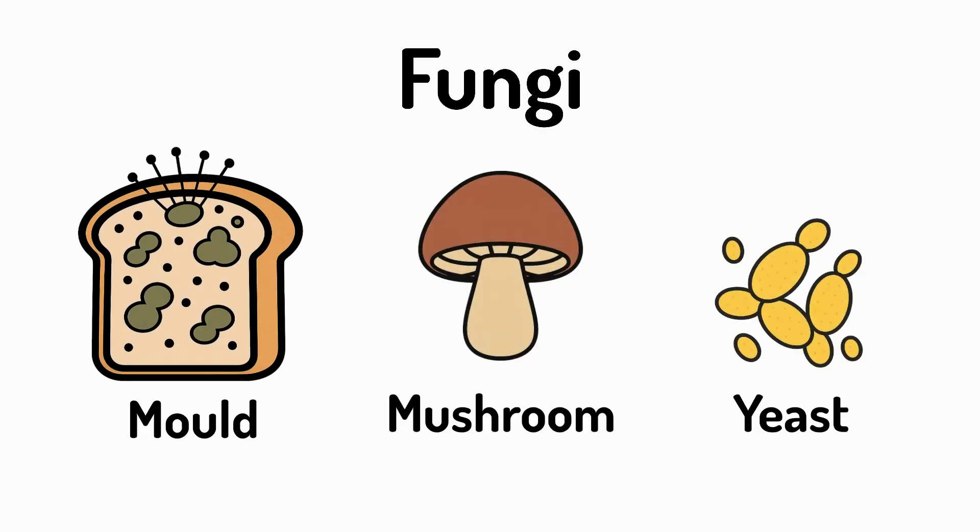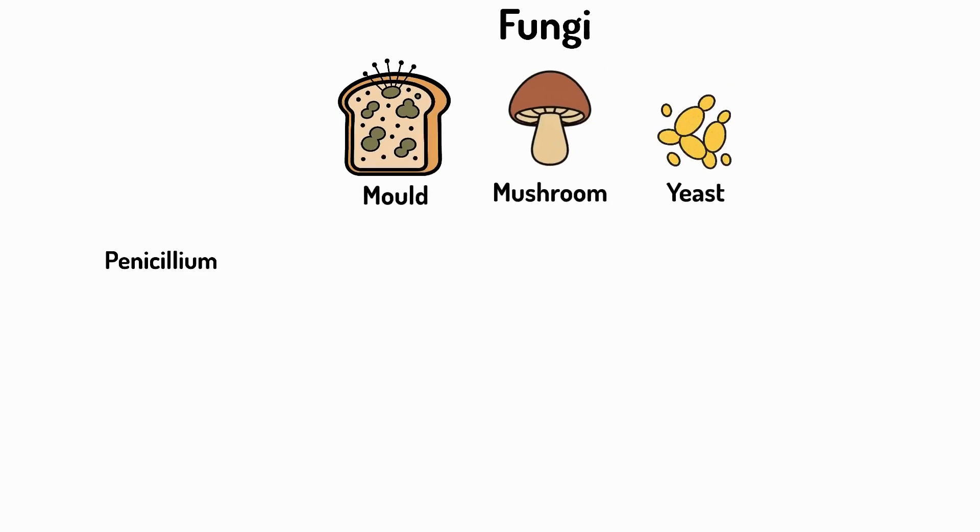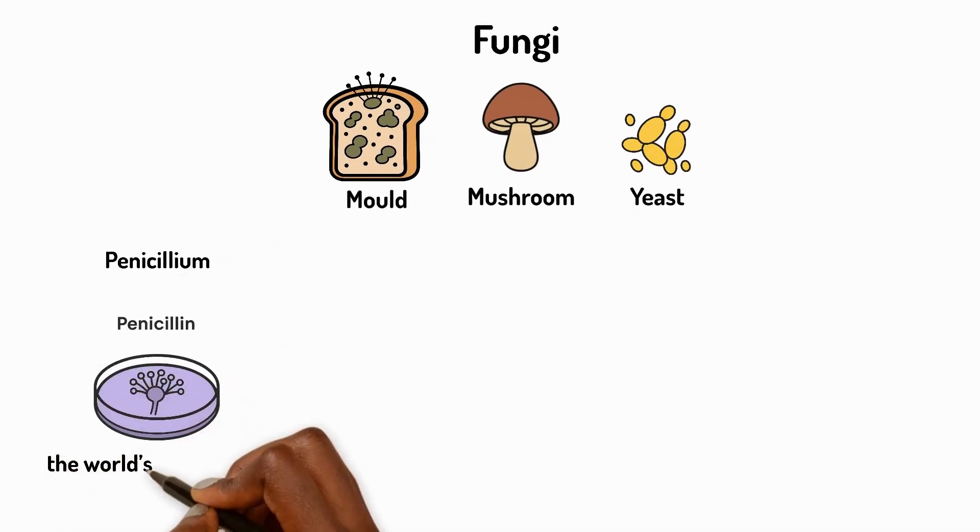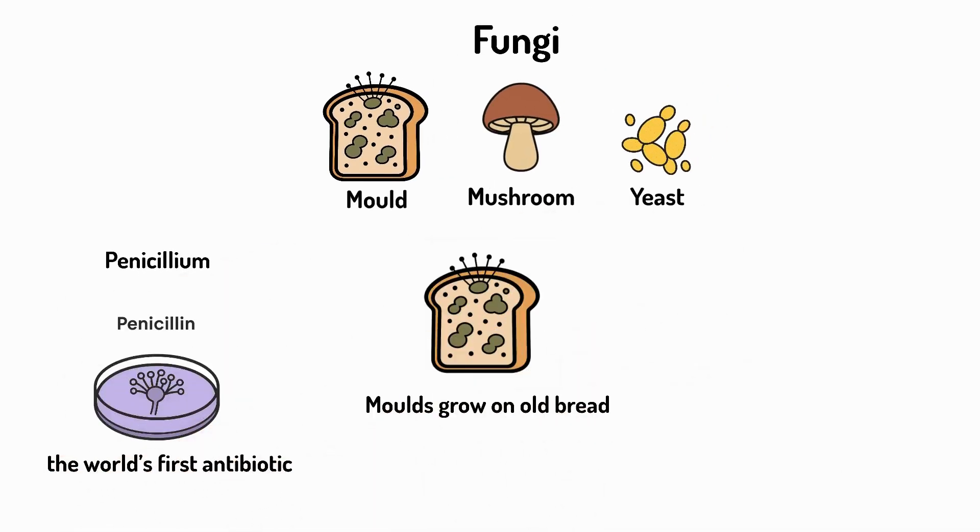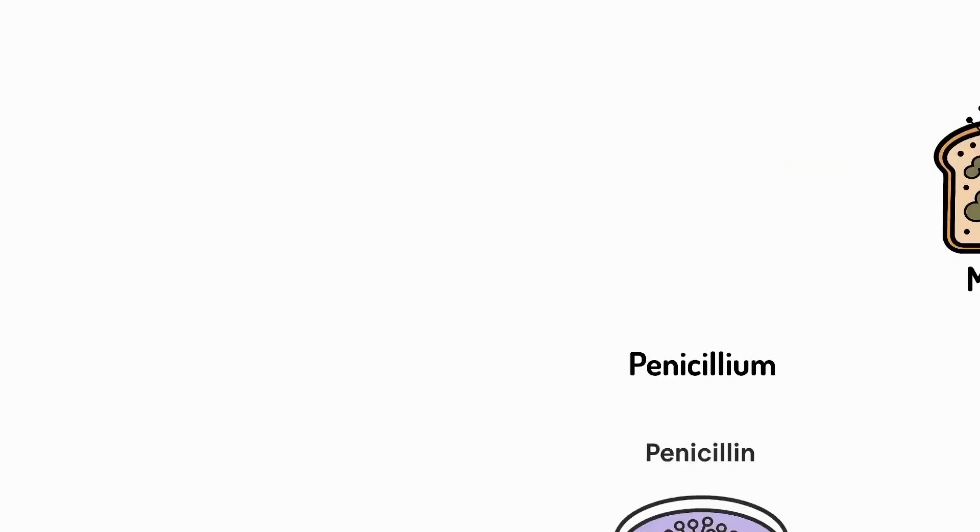Fungi include mold, mushrooms and yeast. Penicillium is a fungus that was used to make penicillin, the world's first antibiotic. Molds grow on old bread. Yeast helps bread rise.